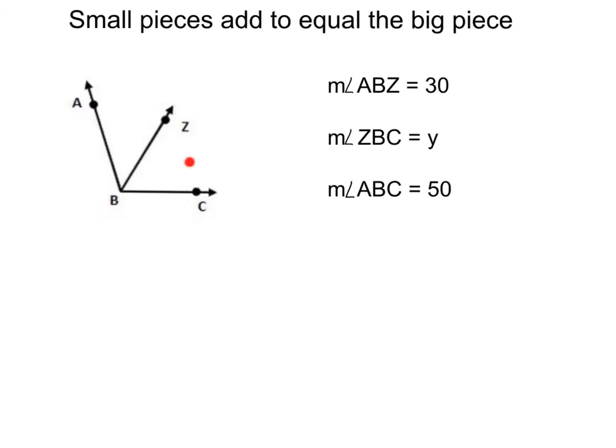Same idea with angles. If we knew that measure of angle ABZ was 30, that's the measure of ABZ, 30. We also knew that measure of ZBC was equal to y. That's ZBC right here, y. And the big angle ABC, this whole big angle, was equal to 50.